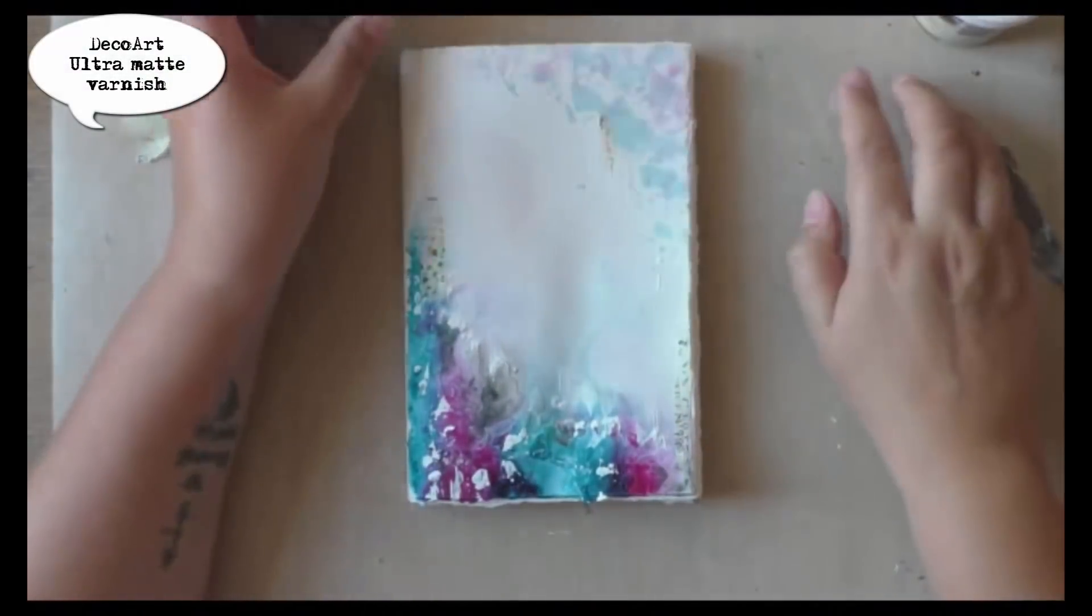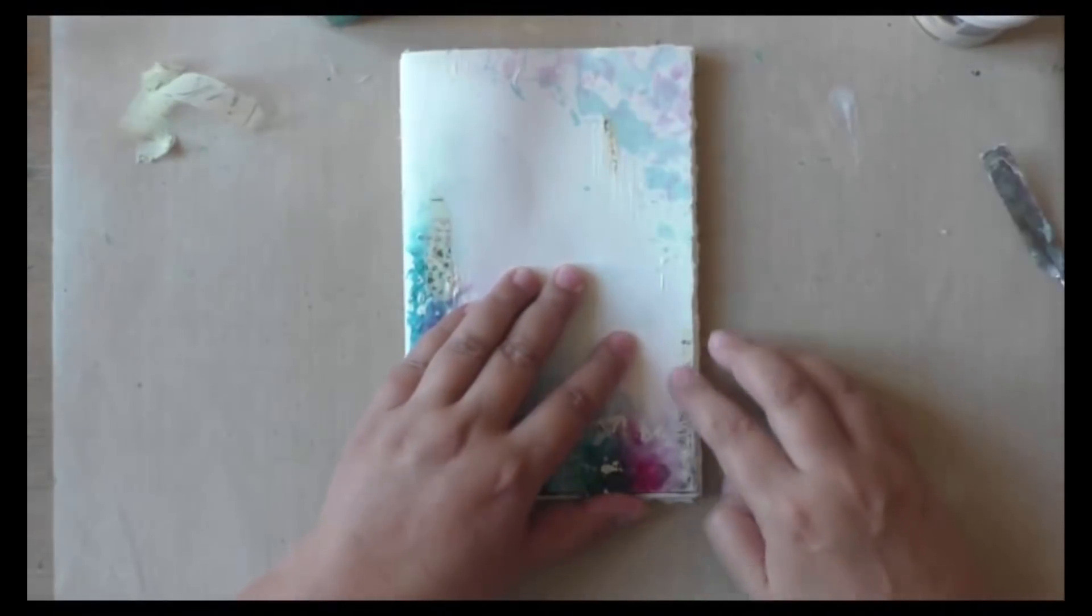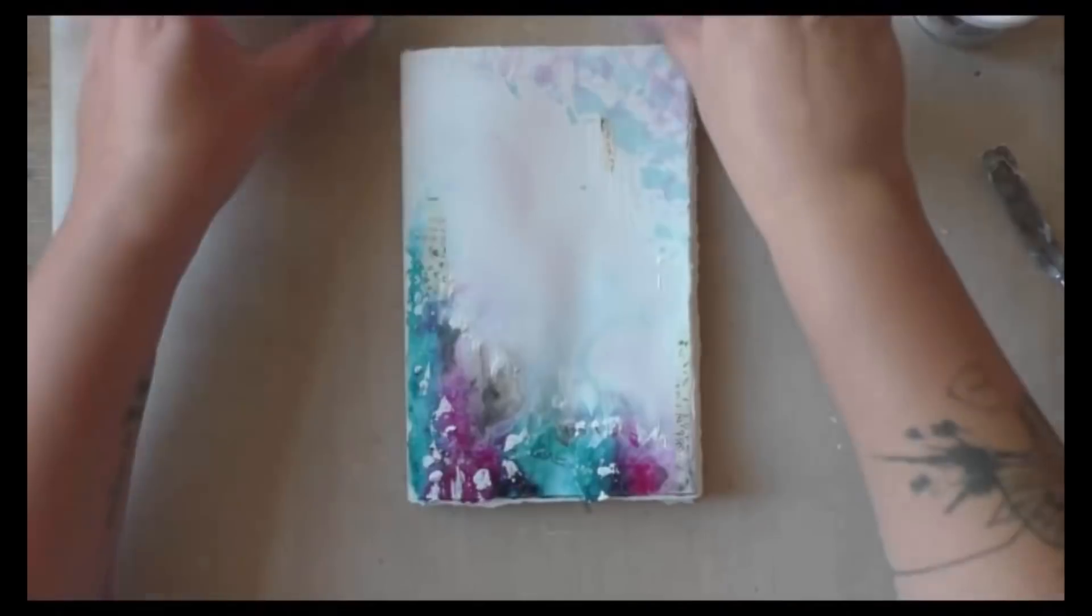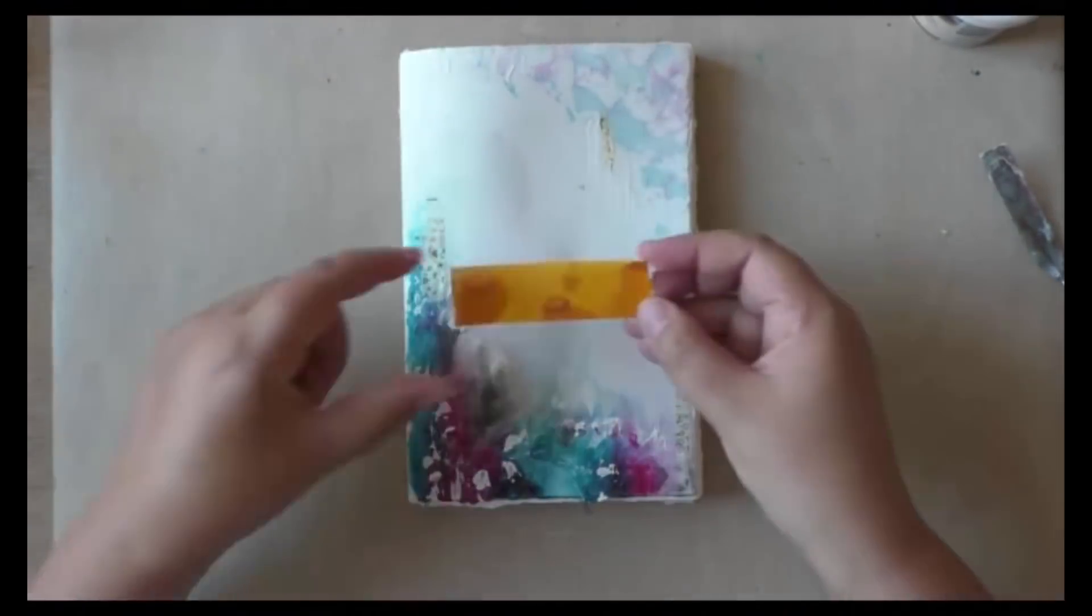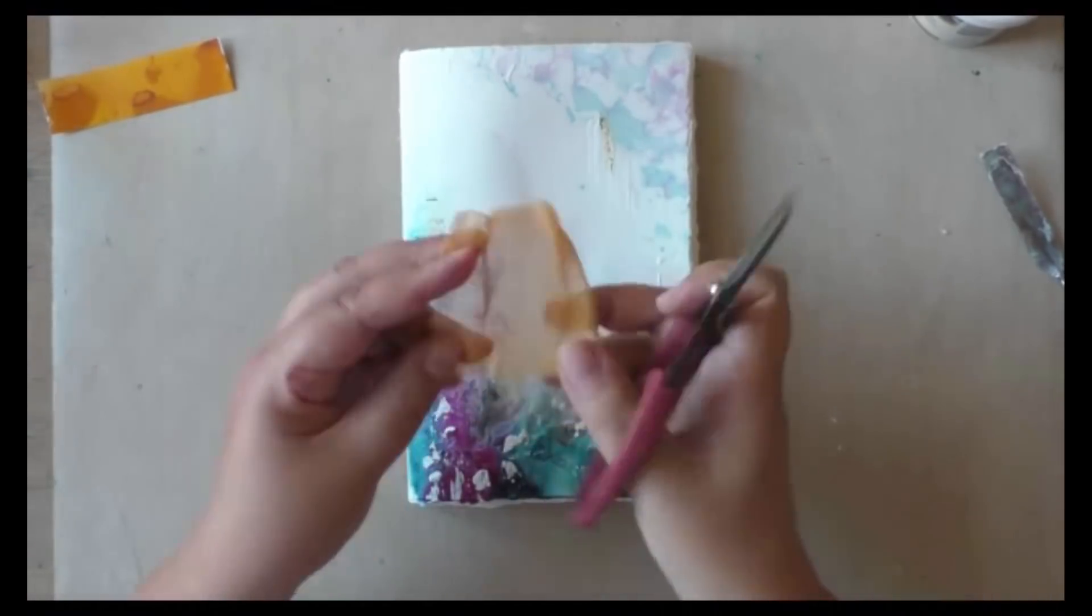Washi tape has the nasty habit of coming loose after a while, so to make sure that it will stay in place, I'm just applying a thin layer of ultra matte varnish over it, so you won't even see it, but it will help the washi tape to stay in place.